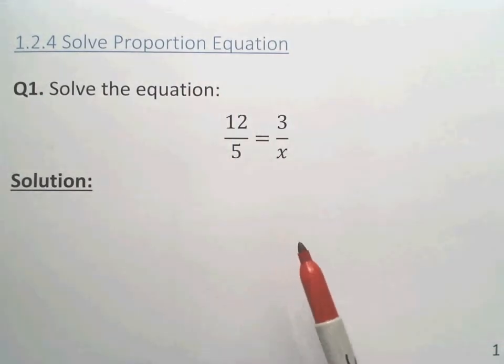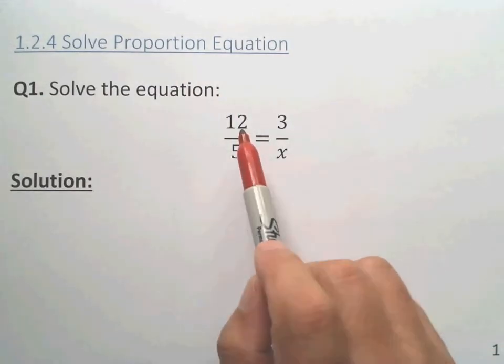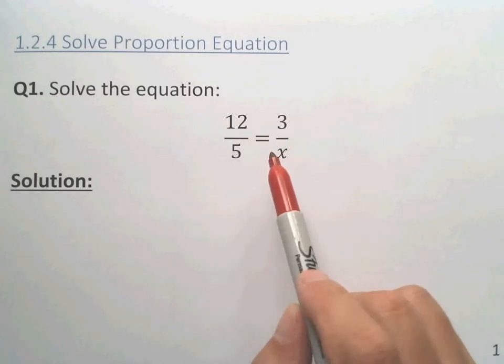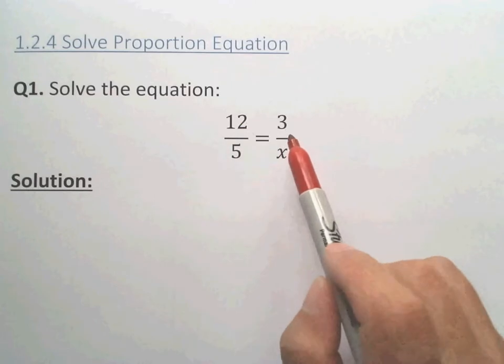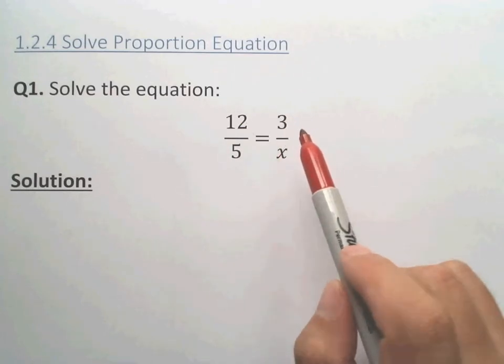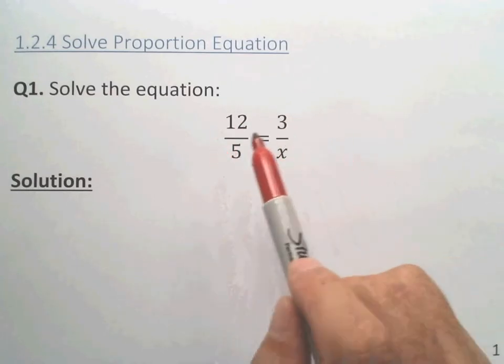When we're going to convert the unit using proportion method, we have to solve a proportion equation. So let me show you two examples. These we call a proportion equation, right? These are ratio or rate to the left and another rate or ratio to the right. So the two rates are the same, so we have the proportion equation.